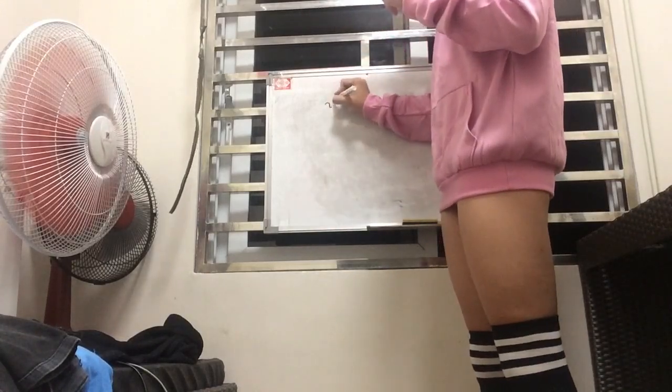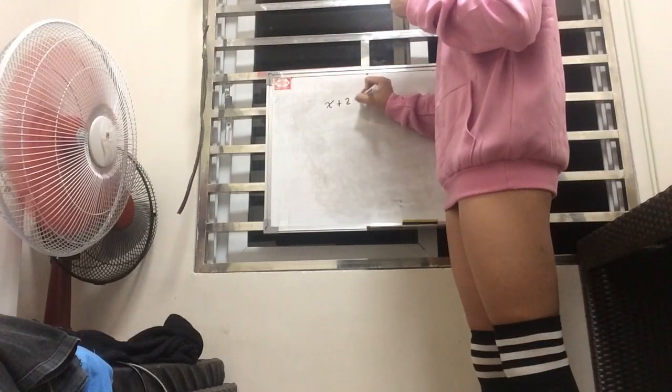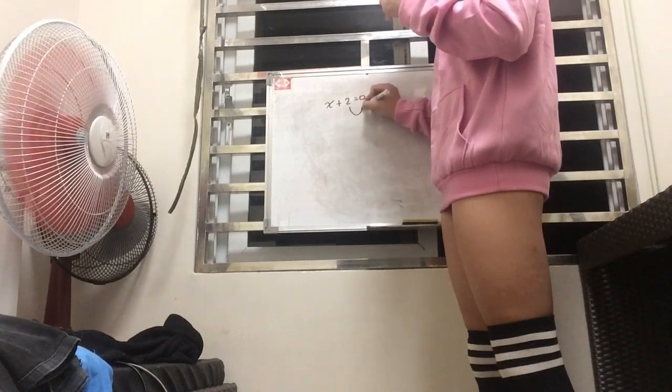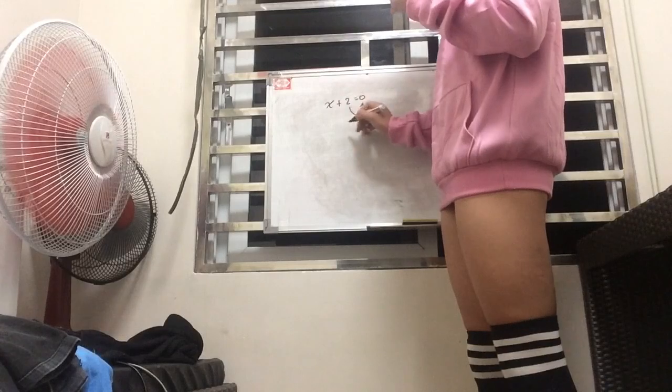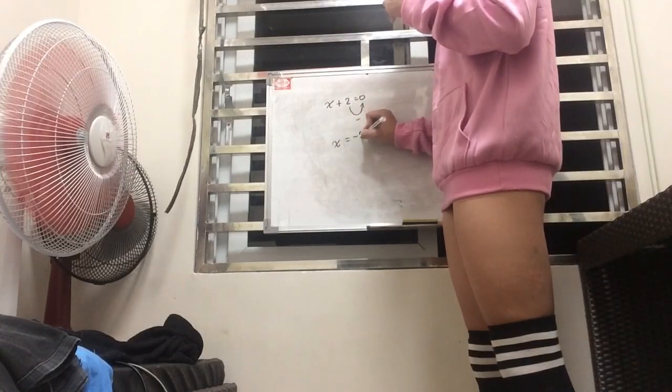So if we're given a certain equation, x plus 2 equals 0. To find x, we basically move this to the other side of the equation and change its sign. So since this one is positive, we have x equals, turn it to negative, so x equals negative 2.